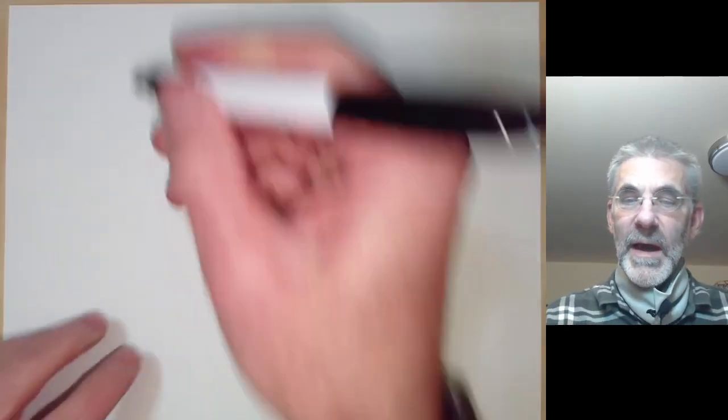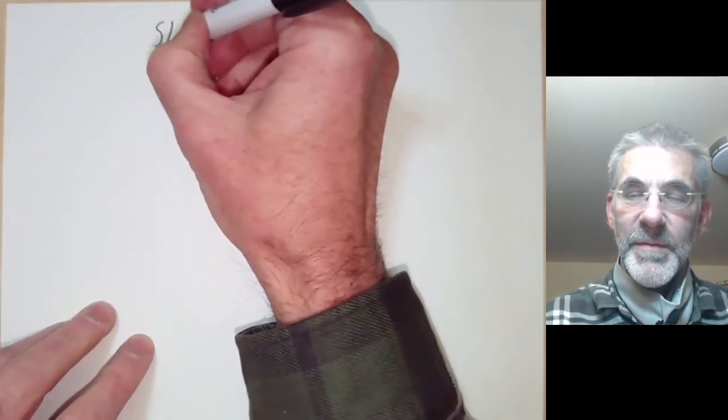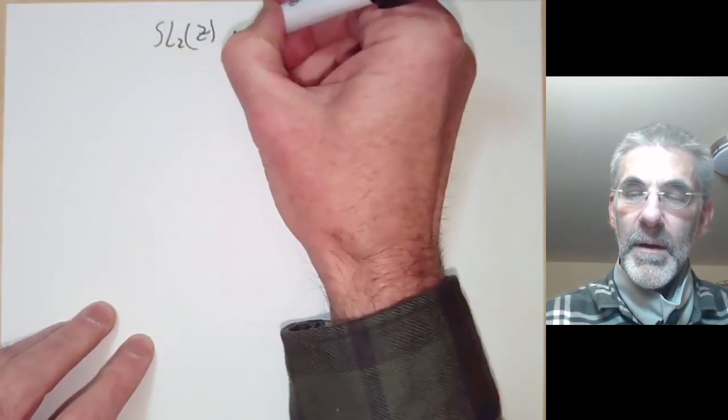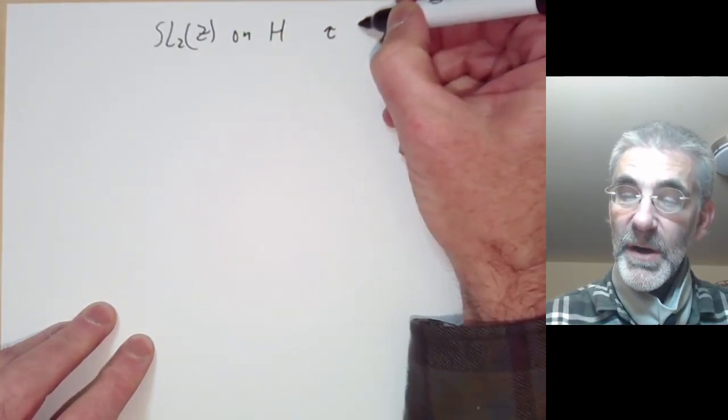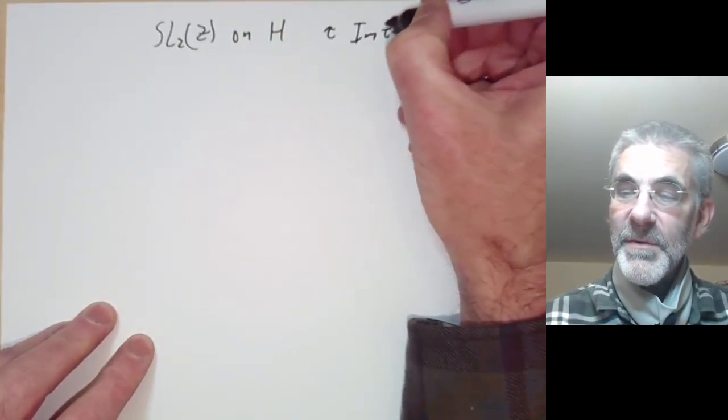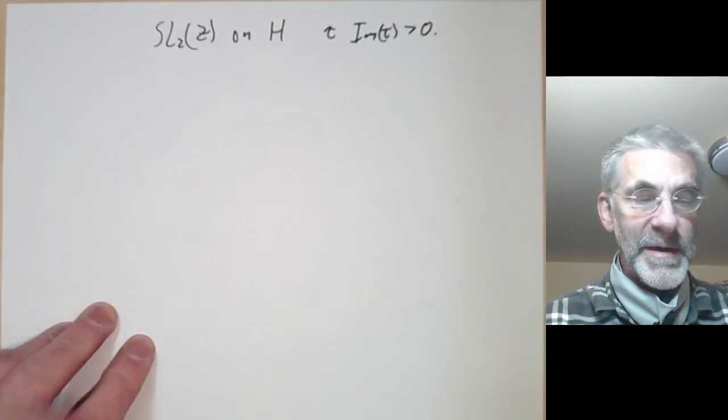This lecture is part of an online course on modular forms and will be about the action of the group SL2Z on the upper half plane H. So this is just complex numbers tau with the imaginary part of tau greater than zero.